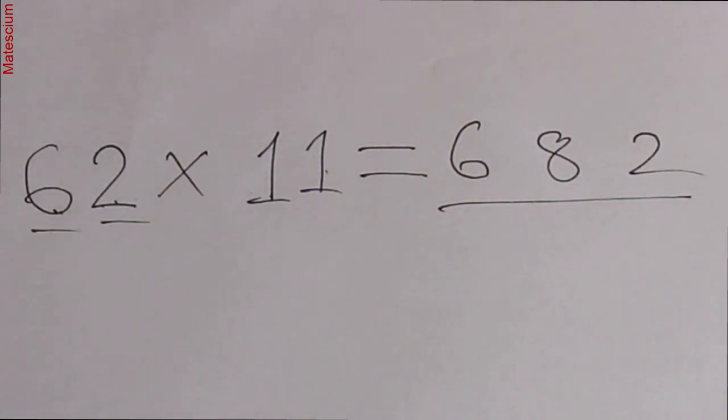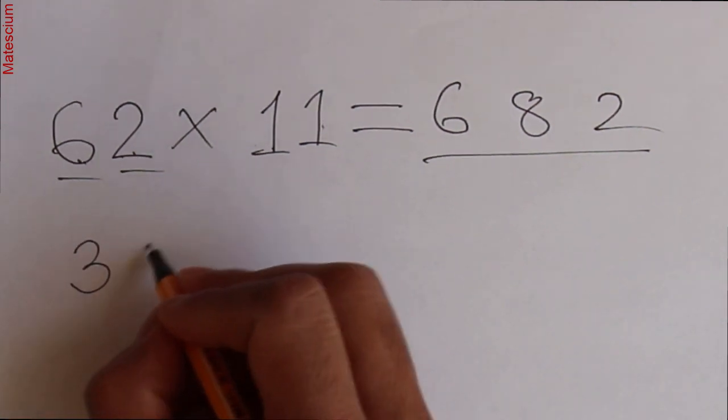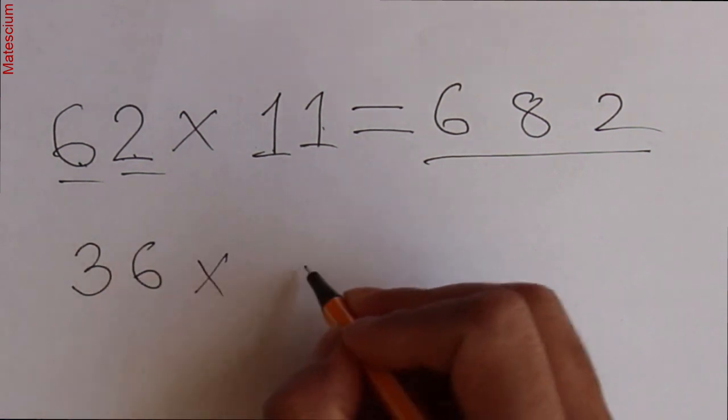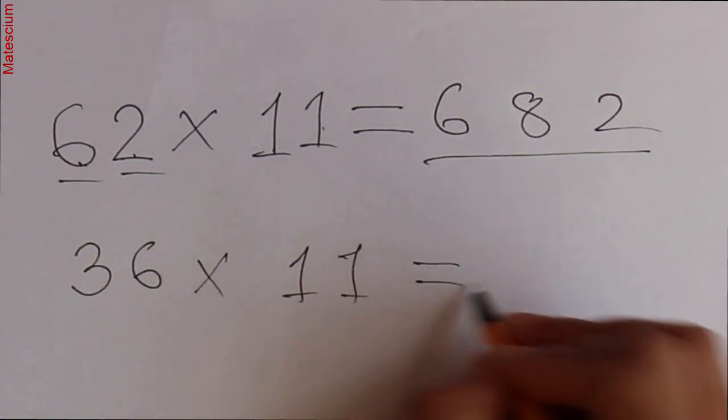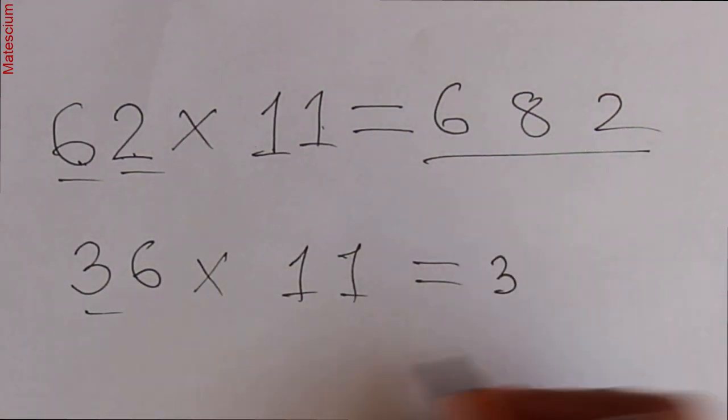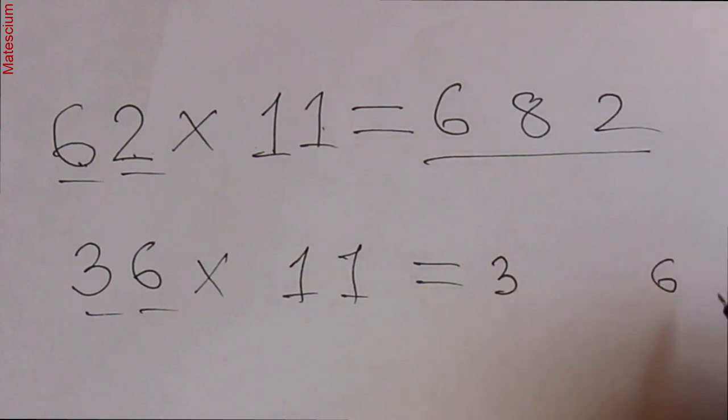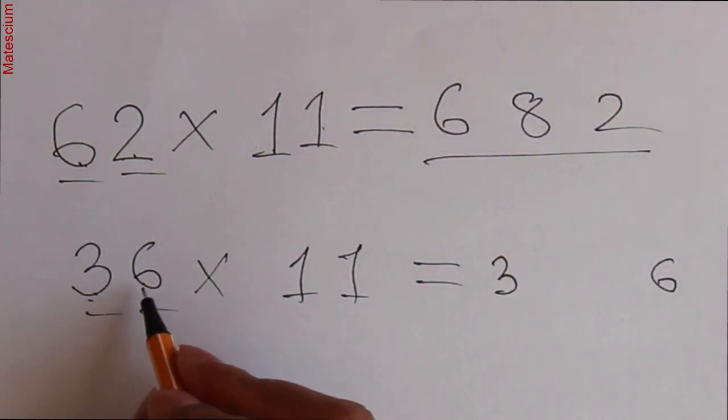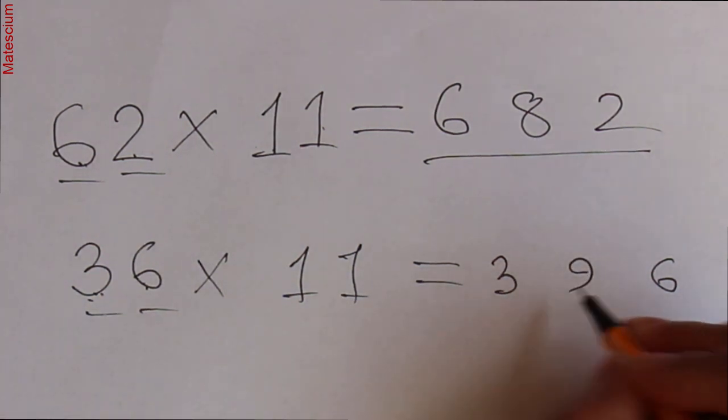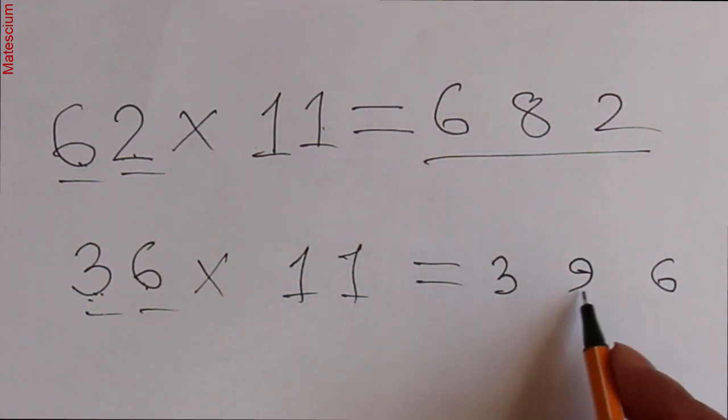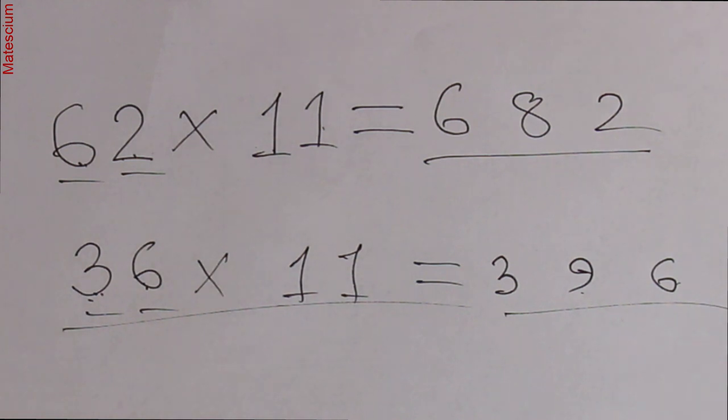Well, let's do another example: 36 times 11. Write the 3 on one side and the 6 on the other side, keeping distance. Then add these 2 digits. 6 plus 3 is 9. That means 396 is the answer. It's just as simple. Within 5 seconds you can solve it.